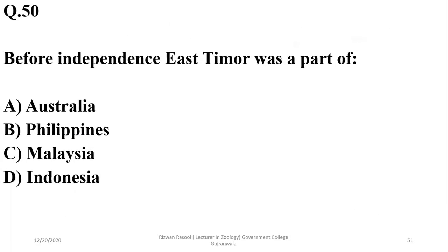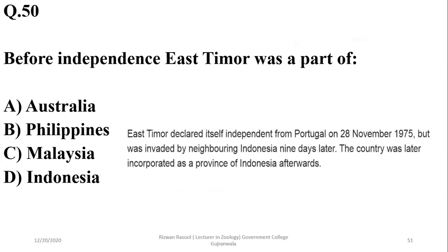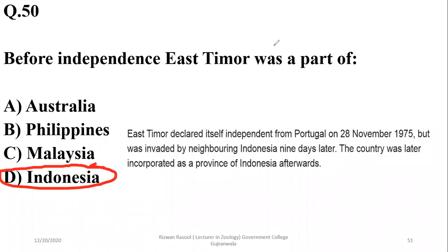Question 50: Before independence, East Timor was a part of Indonesia. D is the right option, I think, because it was first a territory of Portugal on 28 November 1975, but was later invaded by neighboring Indonesia nine days later. So Indonesia could be the right option.